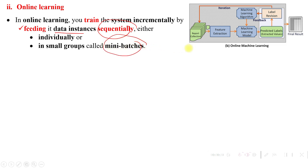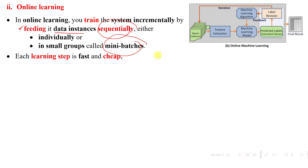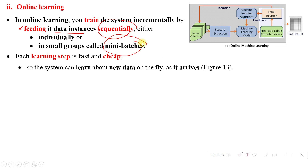So simply this is called online learning — we are training the model incrementally as a sequence of data is provided to the model. It may be individually or in small groups, simply called mini-batches. Each learning step is fast and cheap.